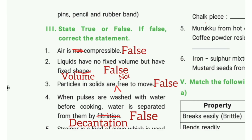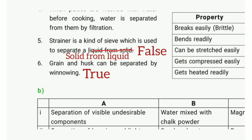Fourth one: when pulses are washed with water before cooking, water is separated from them by filtration. The answer is false. Fifth one: strainer is a type of sieve which is used to separate a liquid from solid. The answer is false. Correct statement: it separates solid from liquid. Sixth one: grain and husk can be separated by winnowing. The answer is true.